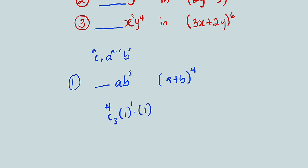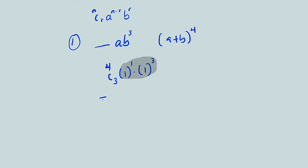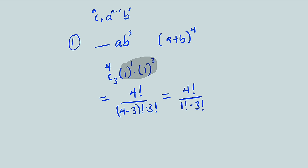The coefficient of b is also 1 raised to the power of 3. Remember the sum of the powers will always be equal to n, which is 4. Since both coefficients are 1, they multiply to give 1, so all we have is 4 combination 3. This equals 4 factorial divided by 1 factorial times 3 factorial. Since 1 factorial is 1, this reduces to 4 times 3 factorial divided by 3 factorial — the 3 factorials cancel, leaving 4. Therefore the coefficient of ab to the third power is 4.